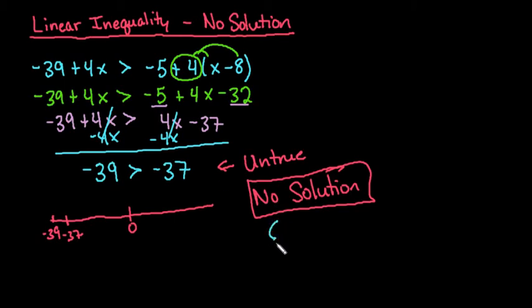If you're dealing with set notation, you would just say that it's an empty set. So for this one, there is no solution because of the fact that negative thirty-nine is never going to be greater than negative thirty-seven.